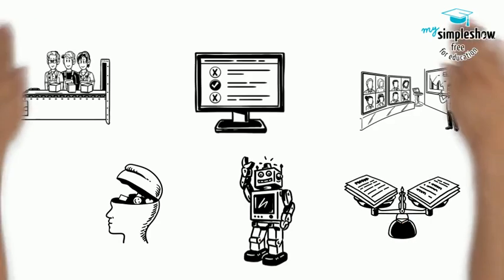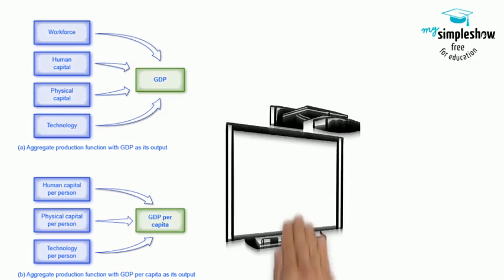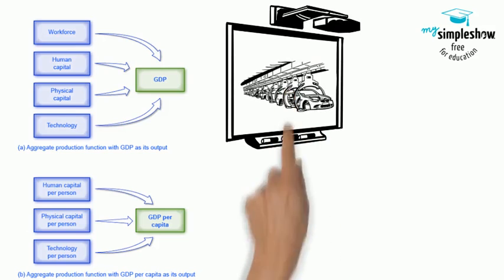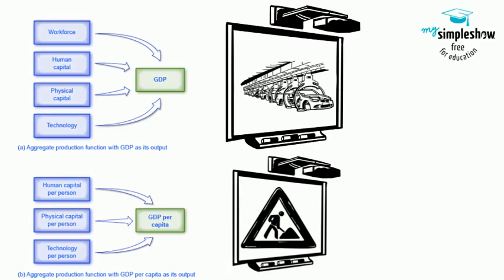Recall: an aggregate production function shows what goes into producing the output for an overall economy. The first aggregate production function has GDP as its output. The second has GDP per capita as its output. Because we calculate it on a per-person basis, we already figure the labor input into the other factors and do not need to list it separately.